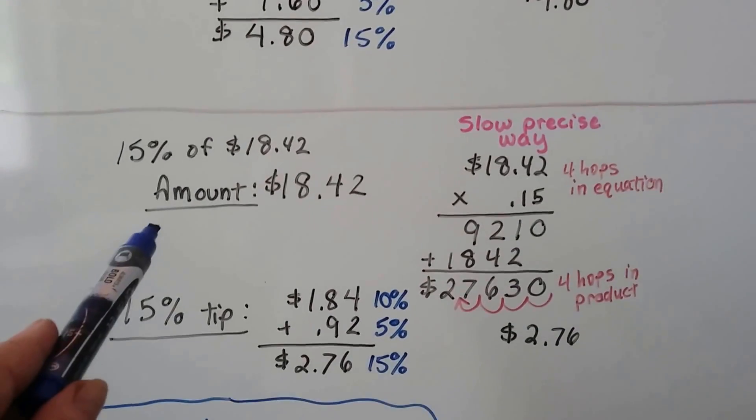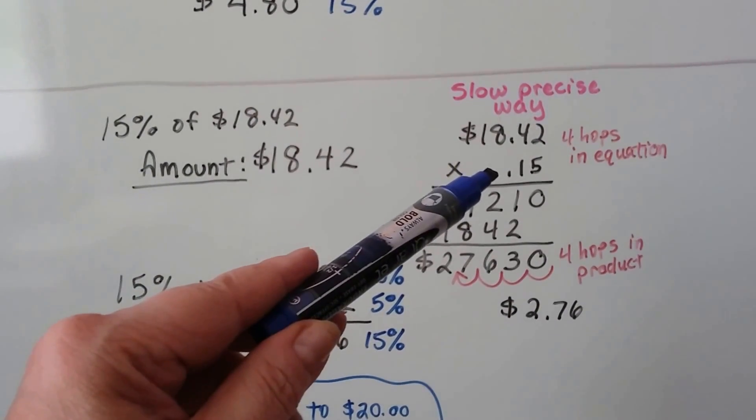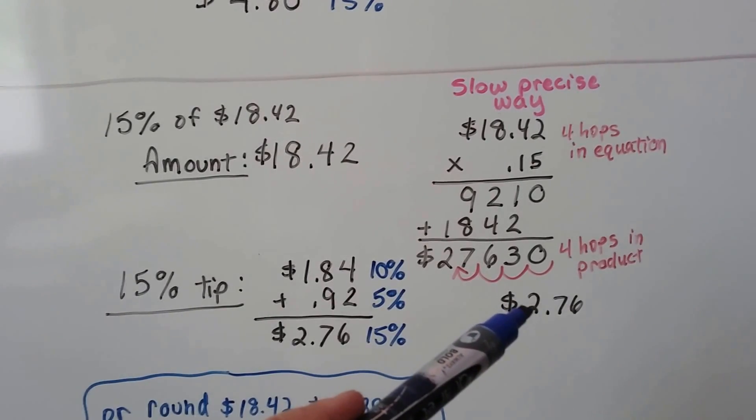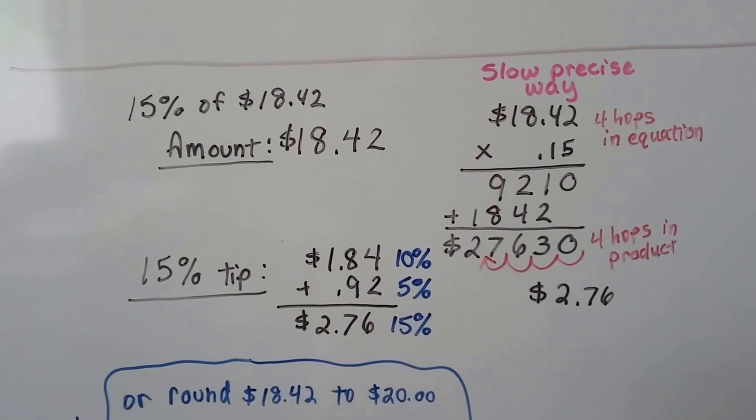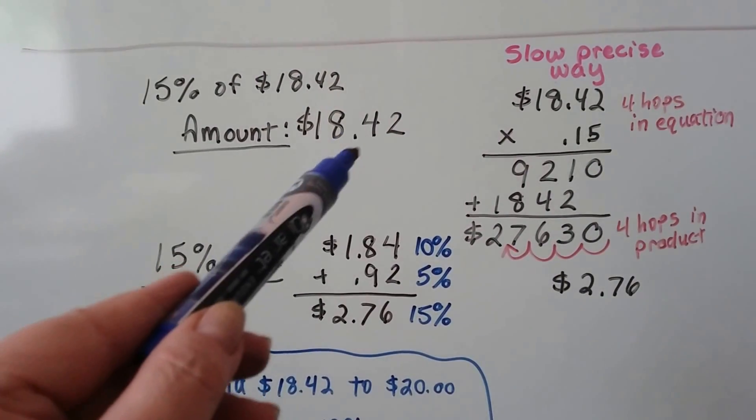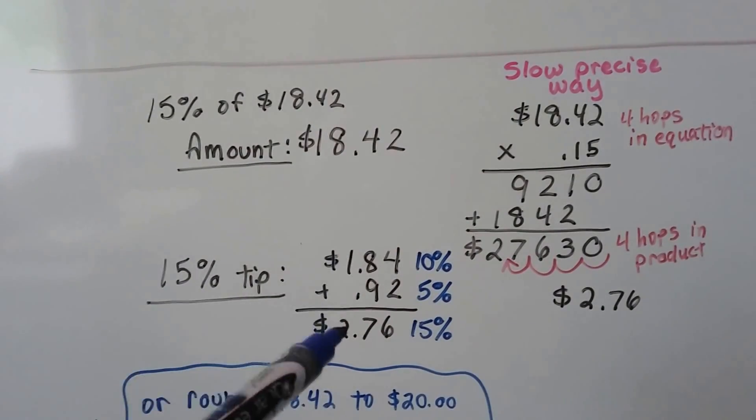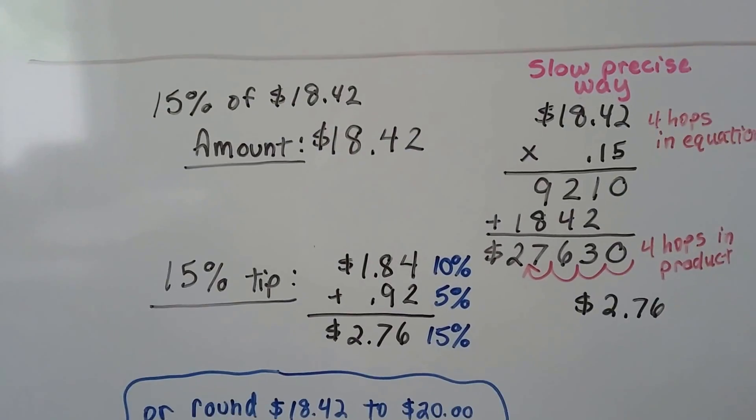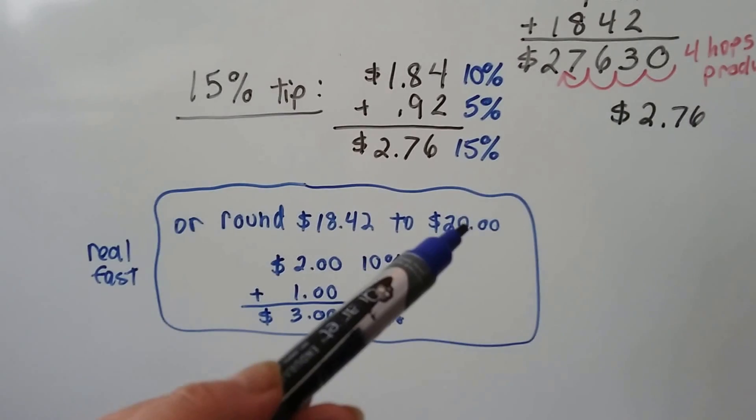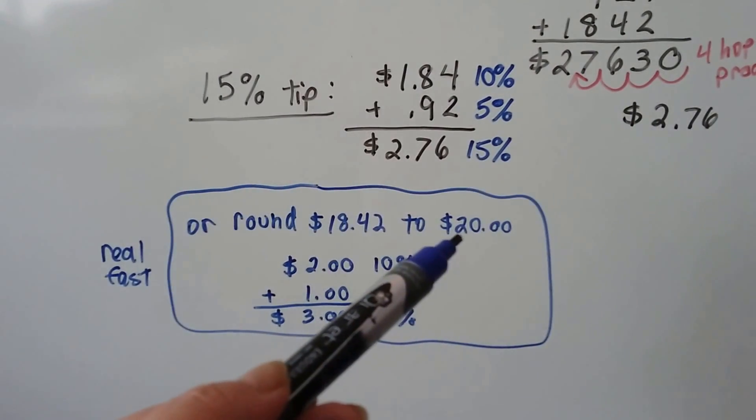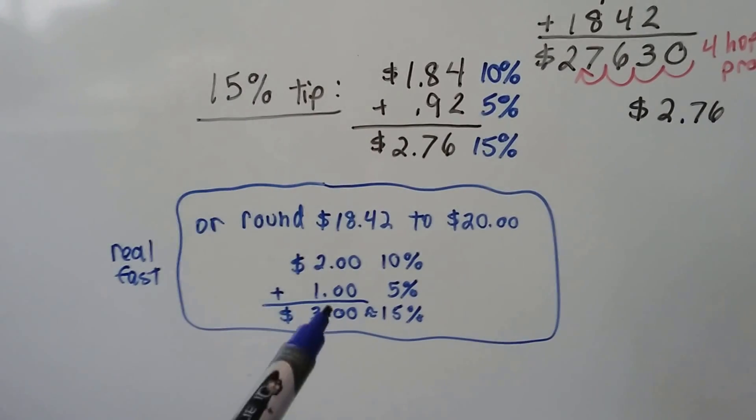Look at this one. $18.42. We can do it the slow, precise way of multiplying it by .15. It would come out as $2.76. We remember there's four hops in the equation, so there's four hops in the product. We can also do moving this decimal point over and getting about $1.84, cutting that in half to get $0.92, adding it together to get $2.76. Or, we could do it the really fast way and just round this up to $19 or $20. We move that decimal place over, 10% of $20 is $2. Half of that is $1, so it's approximately a $3 tip.